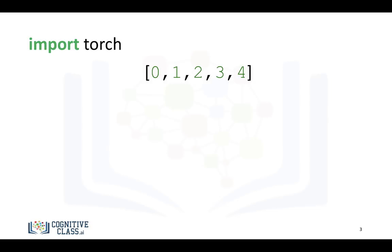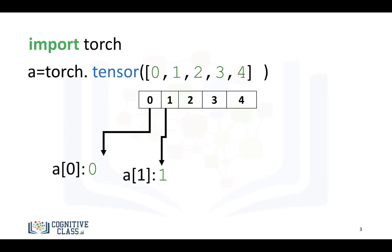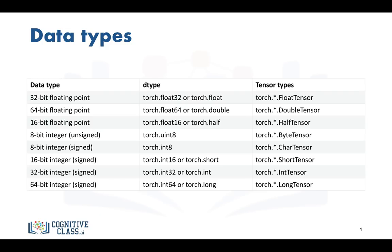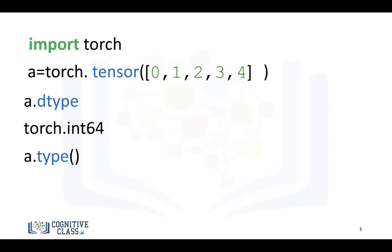We can import Torch and cast the following list to tensor A. Just a note: all the elements within a tensor have to be the same data type. The indexing is as follows, and we can access the first, second, and third element using the standard square brackets. This table summarizes the actual data contained within the tensor and the tensor type. We have a tensor which contains all integers, and the data contained within is a 64-bit integer.